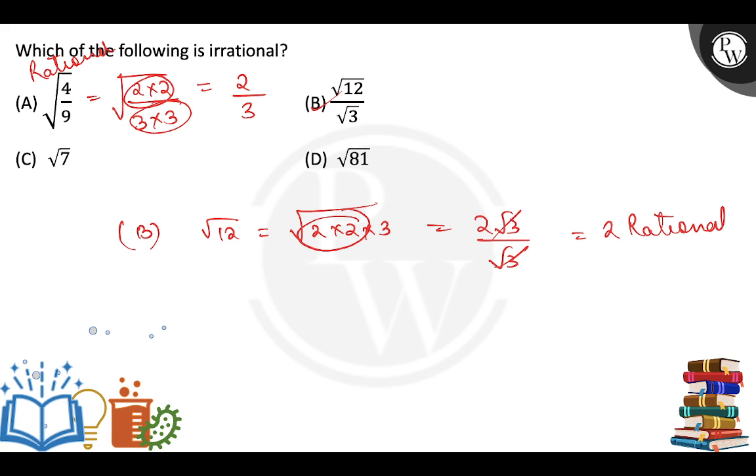Now we have option number C. What is the option number C? Root of 7. If there is no prime number in root, there is no prime number. So how is it always? It is rational.